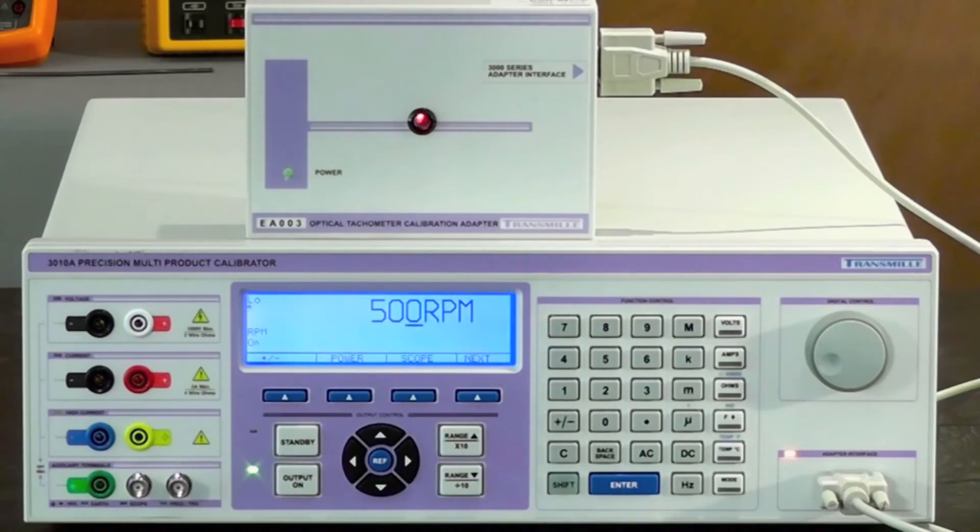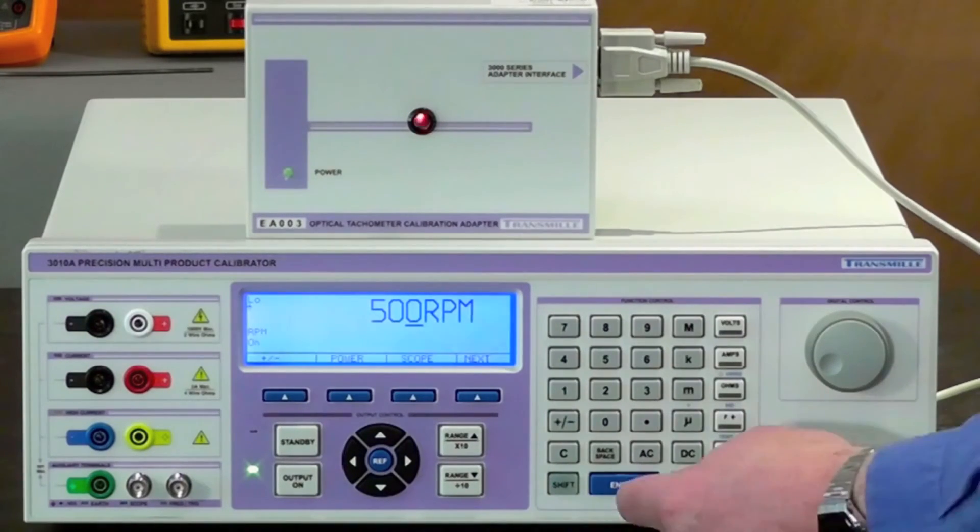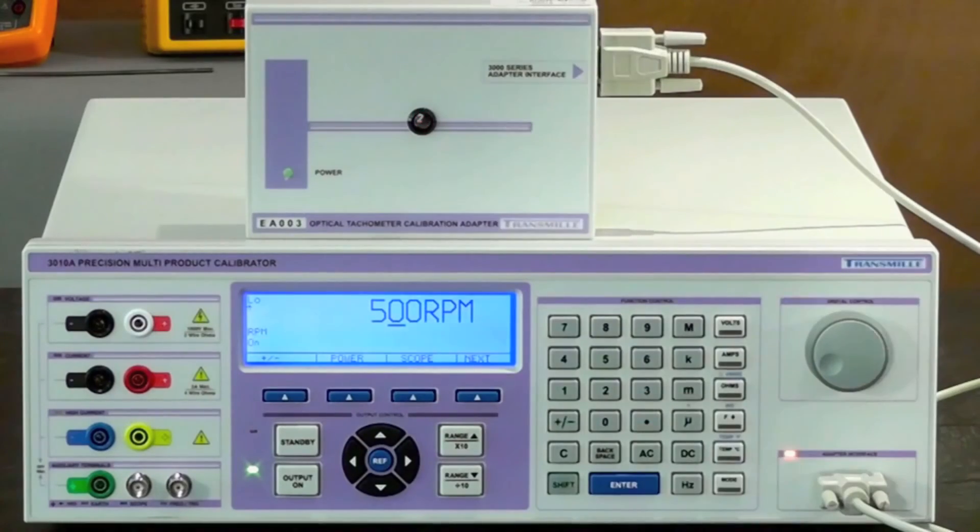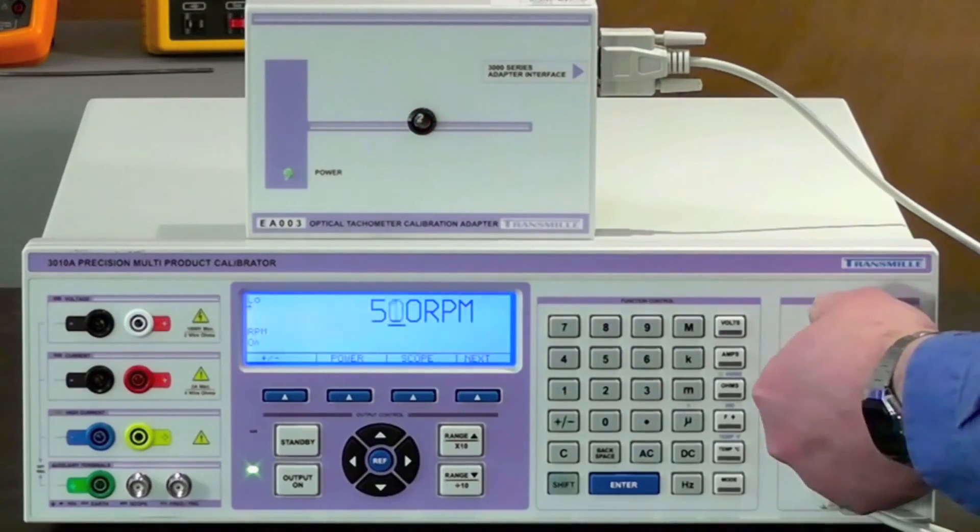You can also adjust the output by placing the cursor under a digit on the display and using the digital control to vary the output.